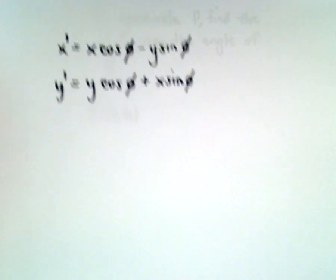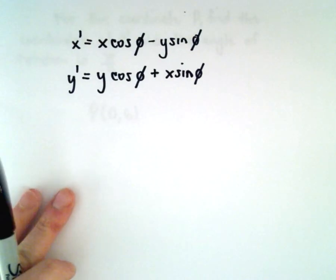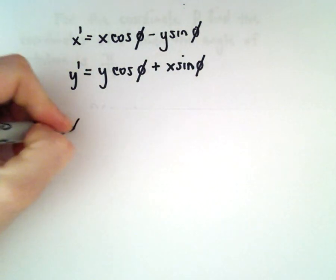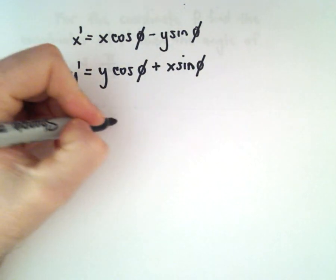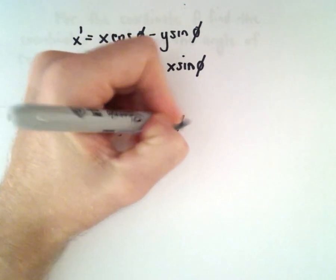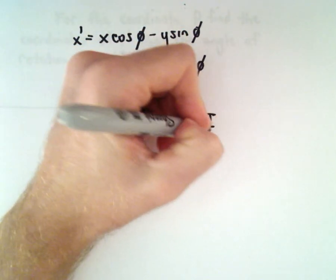This is just going to be a straightforward application of the formula. So in this case, our x value was 0, our y value was 6, and the angle phi was given by pi over 4.